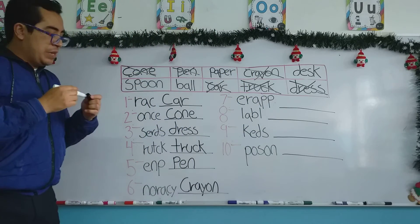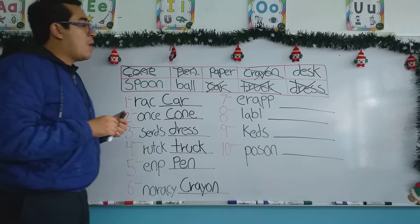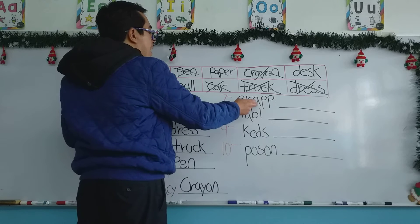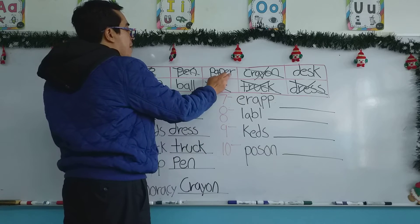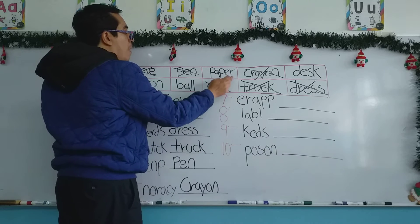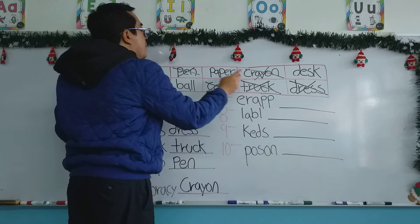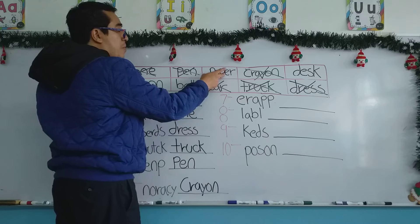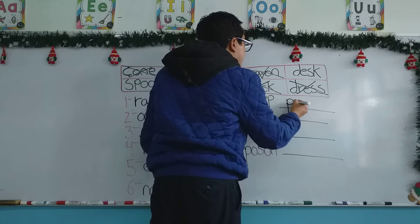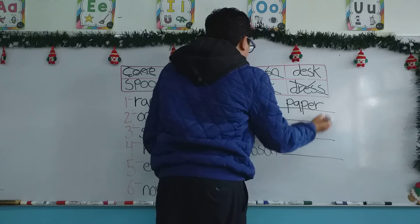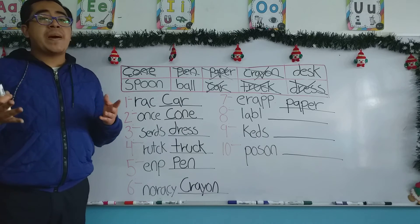We continue with number seven. The letters are E, R, A, B, and P. Right here we have letter E, letter R, letter A, letter B, and letter P. So this is the correct order of the letters, and the word is paper. We mark it with an X. Paper in Spanish, papel.